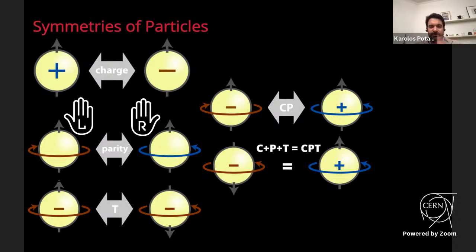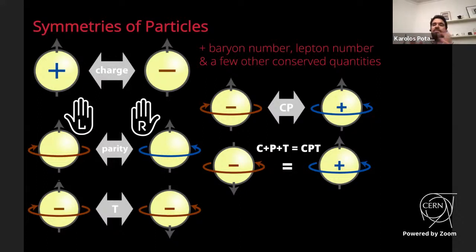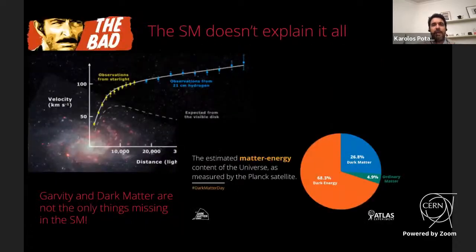Other conserved quantities in Standard Model interactions include baryon number — when you create a baryon (made of quarks), you must create an equal number of anti-baryons — and lepton number, where creating a lepton requires creating an equal number of anti-leptons. While the Standard Model is beautiful and explains many things, it doesn't explain everything: it doesn't incorporate gravity, and cannot explain dark matter or dark energy.